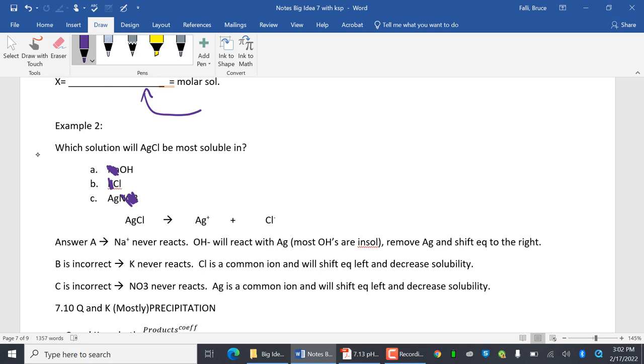So AgCl equals Ag positive plus Cl negative. This is my dissolving equation. OH negative will react with this and remove it. That's why it's my answer. B is incorrect because Cl will react with it and remove it as well. And I will shift the equilibrium. I did that wrong. When I have Cl, Cl doesn't react with Ag. So I'm giving a source of Cl. I'm increasing Cl, right?